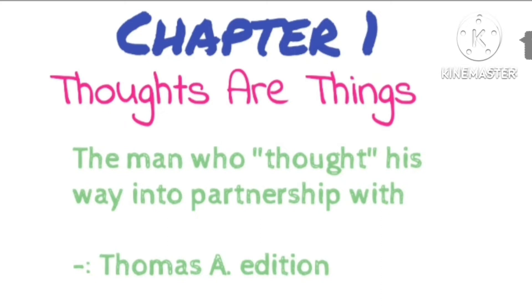One of the chief characteristics of Barnes' desire was that it was definite. He wanted to work with Edison, not for him. Observe carefully the description of how he went about translating his desire into reality, and you will have a better understanding of the thirteen principles which lead to riches.